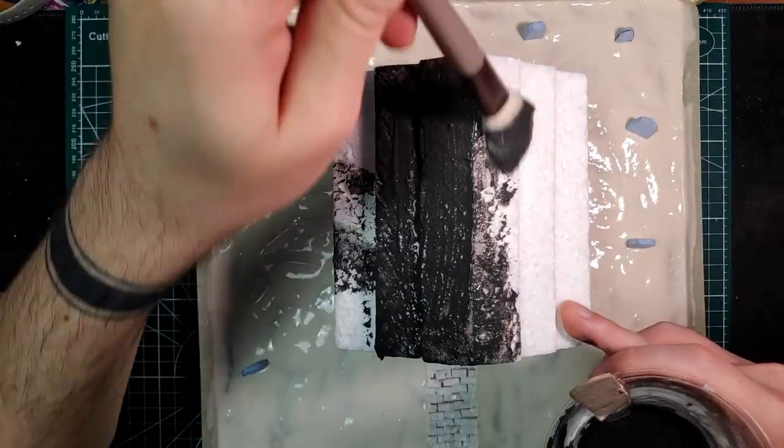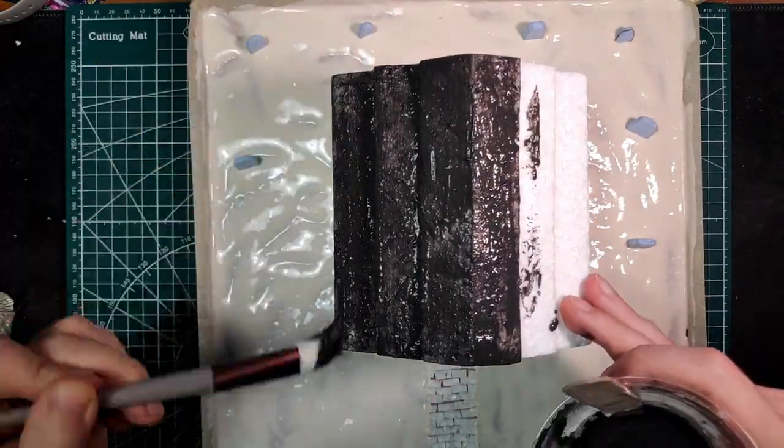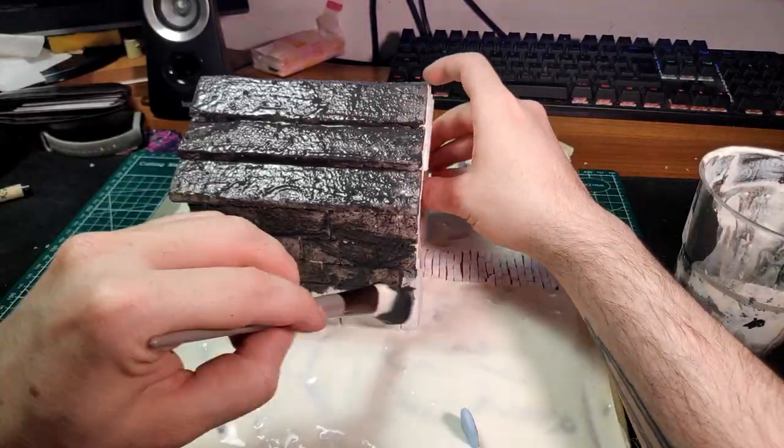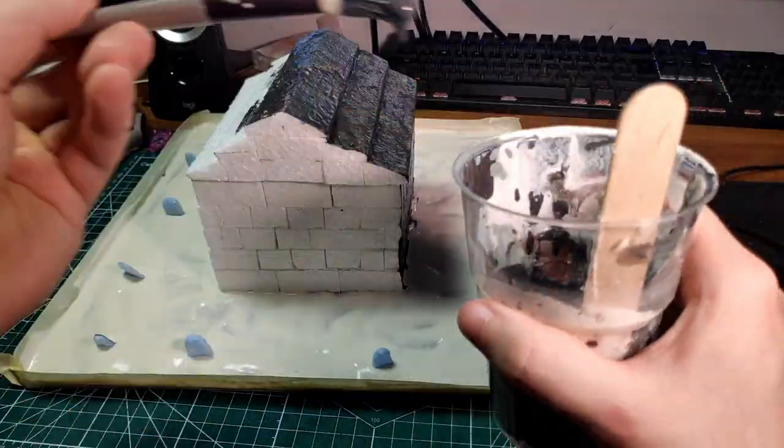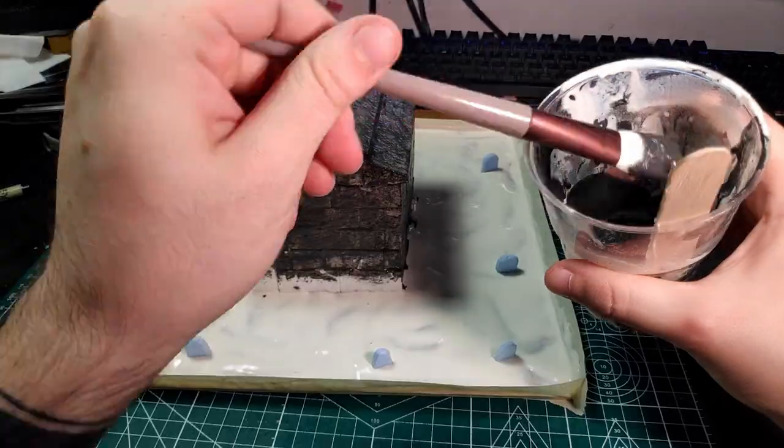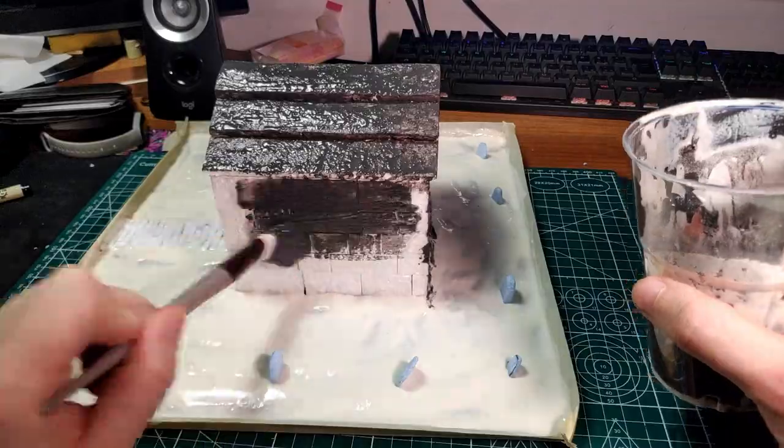Then, make another batch of the same mix, making it more thin this time, to cover and protect all the foam. You can add some paint to this, to make it easier for yourself to see where you have already painted.